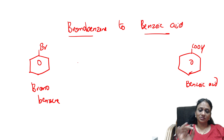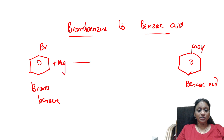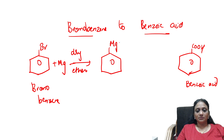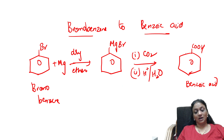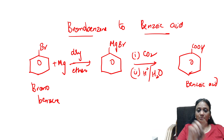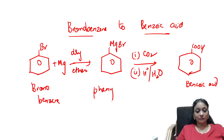Since bromobenzene contains a C–Br bond (a halogen), we can easily add magnesium using Grignard's reagent in dry ether. This forms an adduct with MgBr — phenyl magnesium bromide. Then, treat it with CO2 followed by H⁺ in acidic hydrolysis. The MgBr group is replaced, and CO2 adds in, converting phenyl magnesium bromide into benzoic acid (aromatic carboxylic acid).